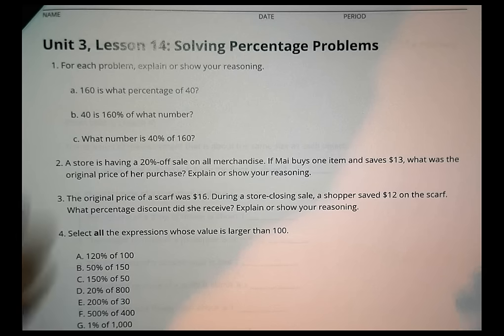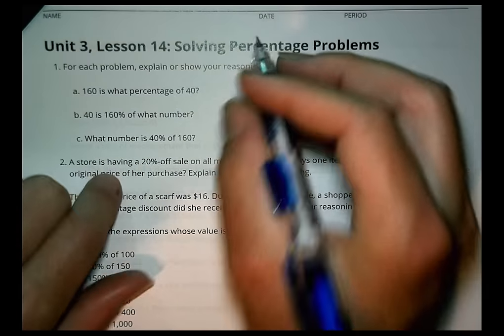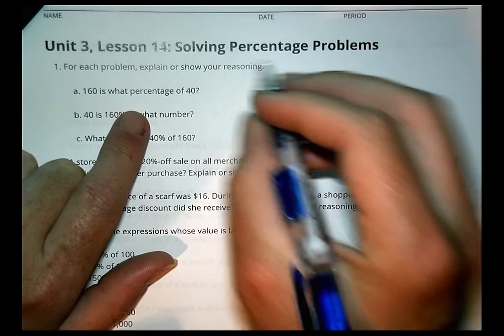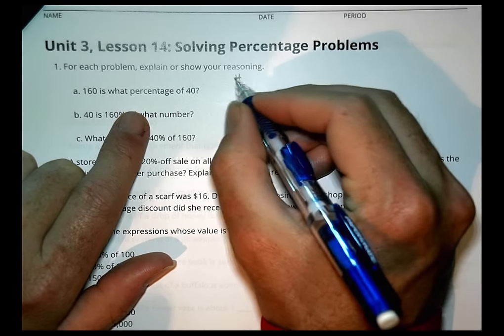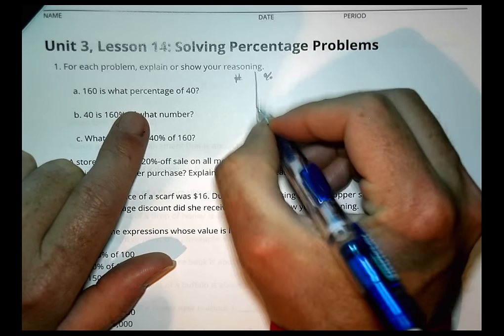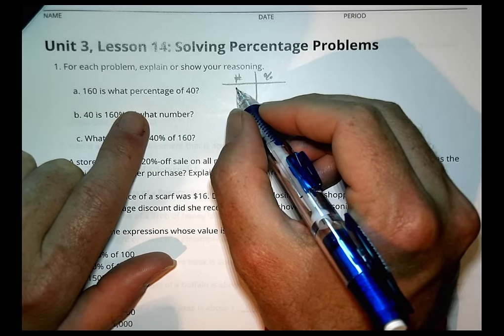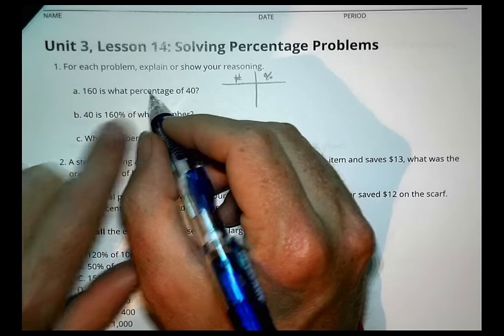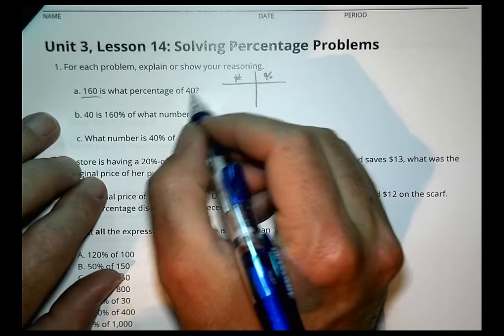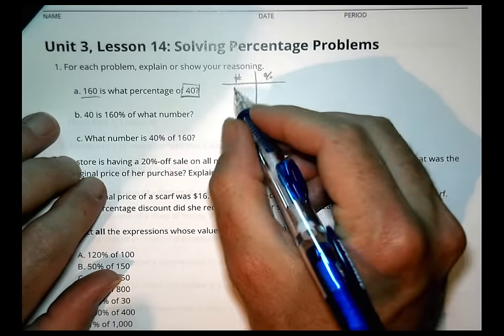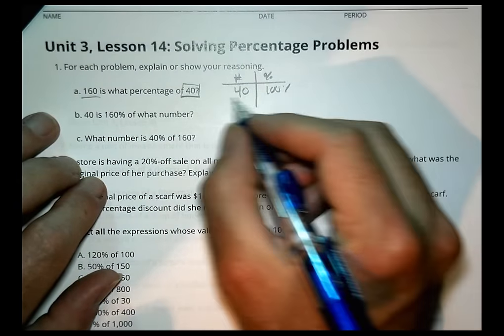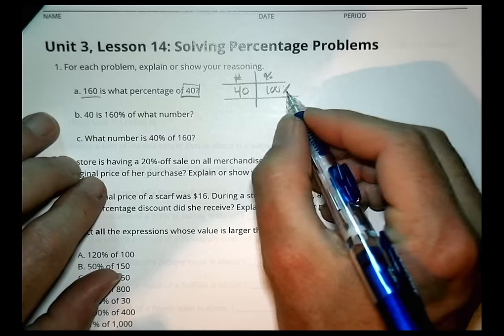Alright. Here we go. Homework time. For each problem, explain or show your reasoning. This first one, 160 is what percent of 40? We have our number and we have our percent. And we have 160. Really, let's start with the 40 because we're saying 160 is what percentage of 40. 40 is like our starting point. 40 is the 100% number.